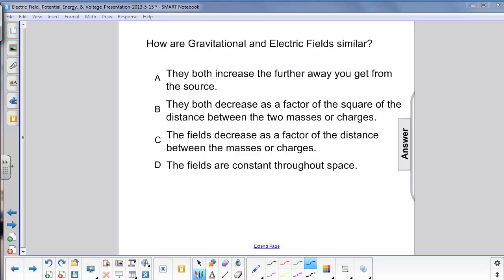How are gravitational and electric fields similar? A, they both increase the further away you get from the source. B, they both decrease as a factor of the square of the distance between the two masses or charges. C, the fields decrease as a factor of the distance between the masses or charges. And D, the fields are constant throughout space.